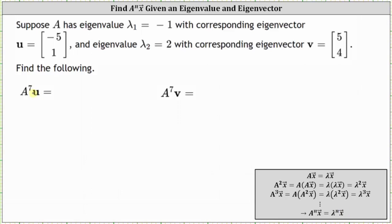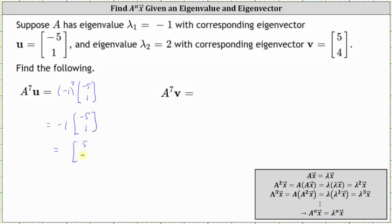This means matrix A to the power of seven times eigenvector u is equal to the eigenvalue of negative one raised to the power of seven times eigenvector u, which is the vector negative five, one. The seventh power of negative one is equal to negative one, giving us negative one times the vector negative five, one, which equals the vector five, negative one.